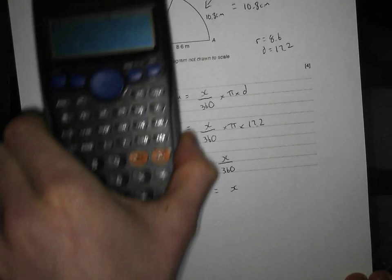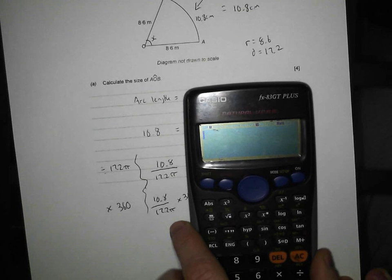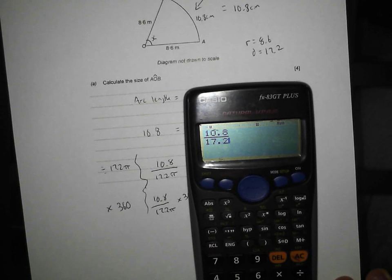So can we tap it into our calculator? Let me get that in a nice position where you can see it. So I need a fraction. I need 10.8 and I need on the bottom 17.2. And as I say, you can put it as times by pi or just put the pi next to it. It doesn't matter.